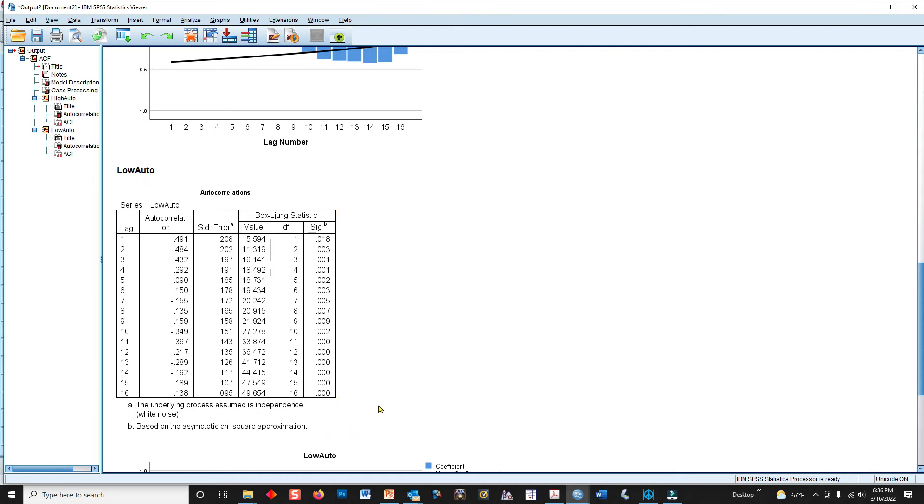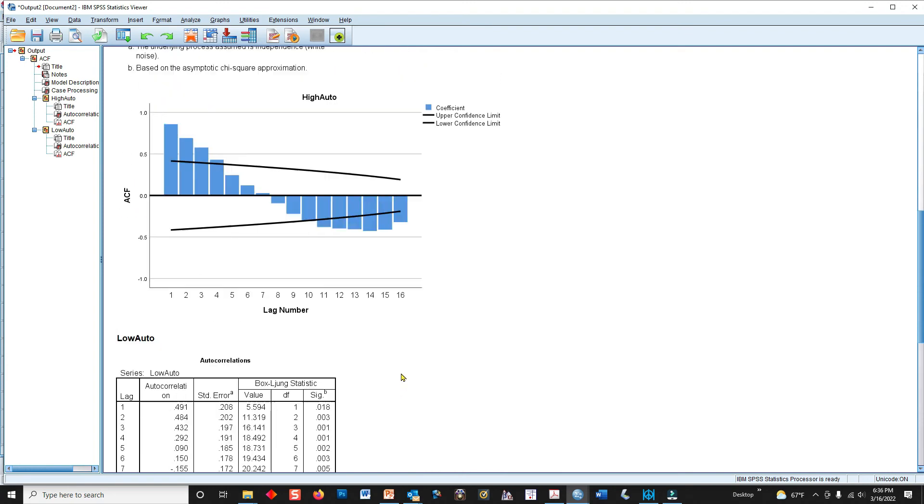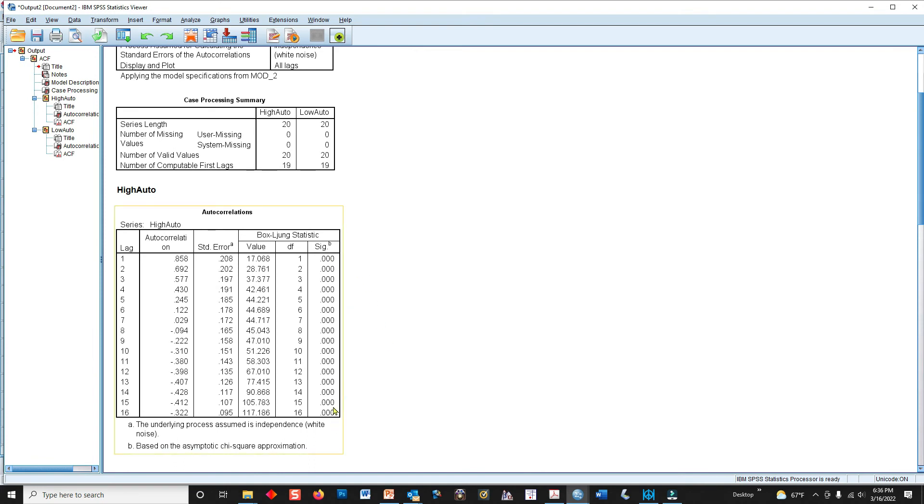What we really want is the Durbin-Watson. All of these ones here are significant, but again, that's not the Durbin-Watson. So in order to get the Durbin, so if you wanted to report the autocorrelation, this is the pathway to get it. But this is not the, as far as I understand, not the appropriate significant value for that autocorrelation.